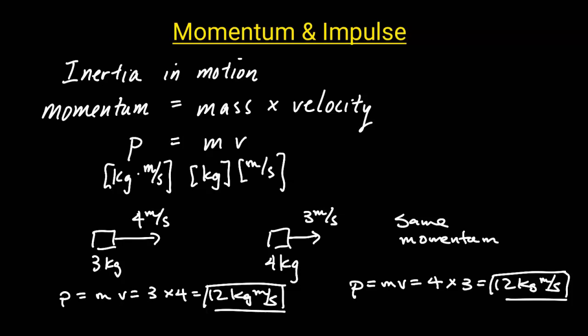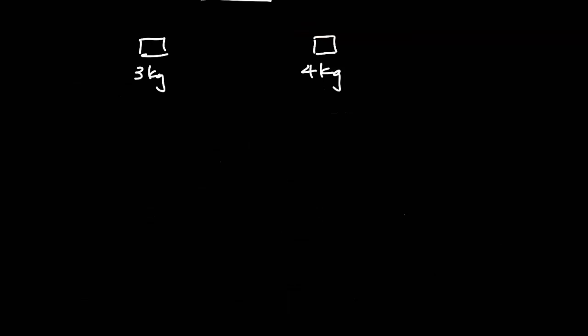Also, momentum is a vector, so momentum can be positive or negative. Let's take a look at these two objects again. But this time, the object on the left is moving to the left with a velocity of 4 meters per second, and the object on the right is still going to the right with a velocity of 3 meters per second. How do their momentums compare? We know the magnitude is going to be 12 kg meters per second.